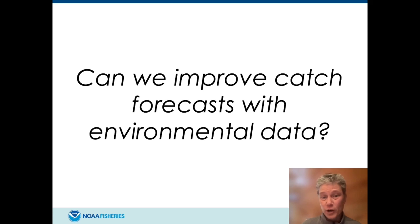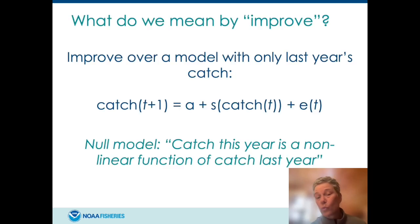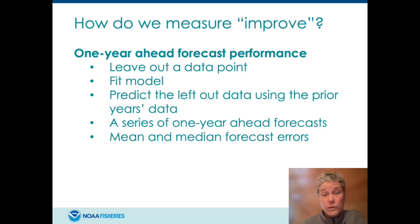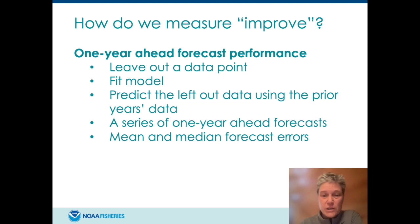We now had a suite of environmental variables that were good candidates for impacting the landings. The next question is: do these variables improve catch forecasts? We defined 'improve' as improving over a null forecast model — forecasting this year's catch based on last year's catch, which is a pretty standard null model for landings forecast. To measure improvement, we used forecast errors rather than model fit, specifically a leave-one-out procedure that creates a series of one-step-ahead forecasts from within the dataset.